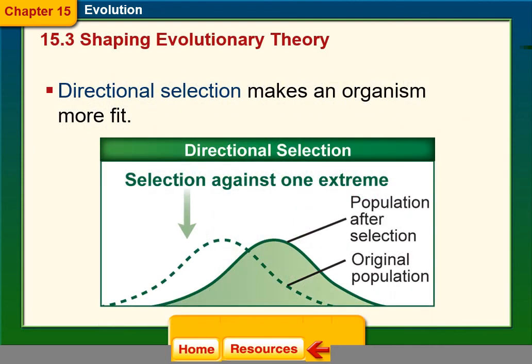Directional selection makes an organism more fit by selecting against one extreme. In the example from the micro-evolution lab, the highest fitness was the recessive phenotype, so the population was directionally selected toward the recessive.